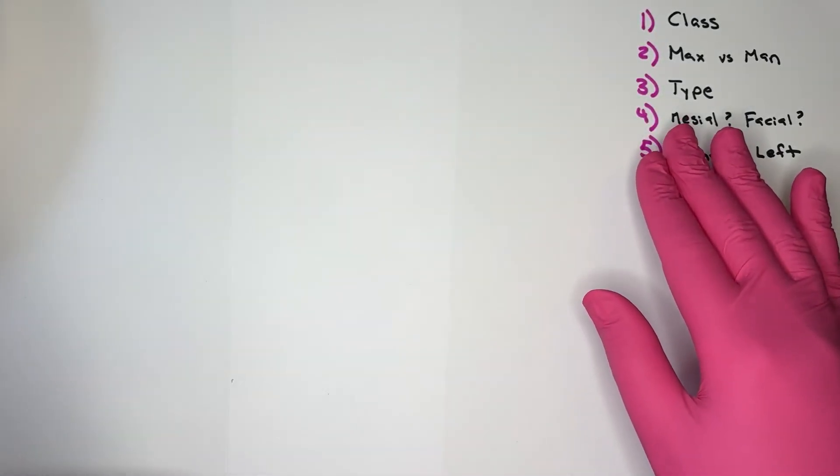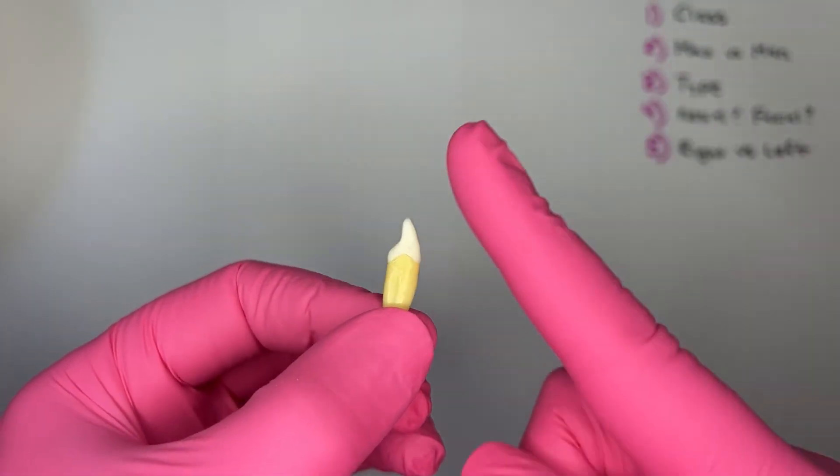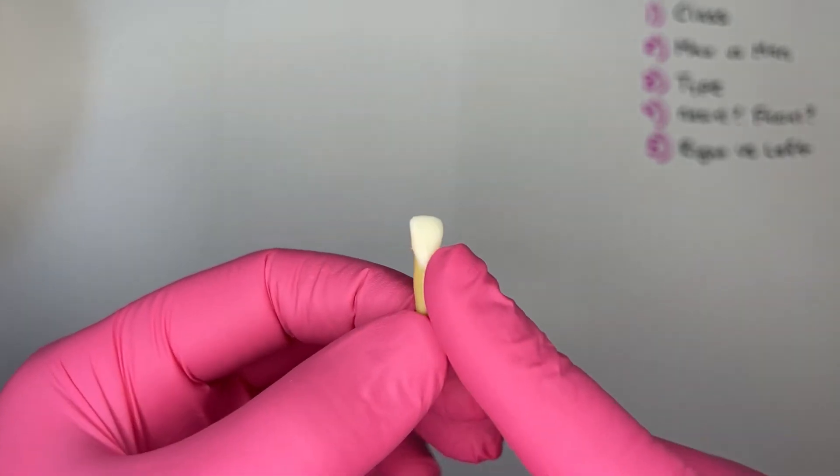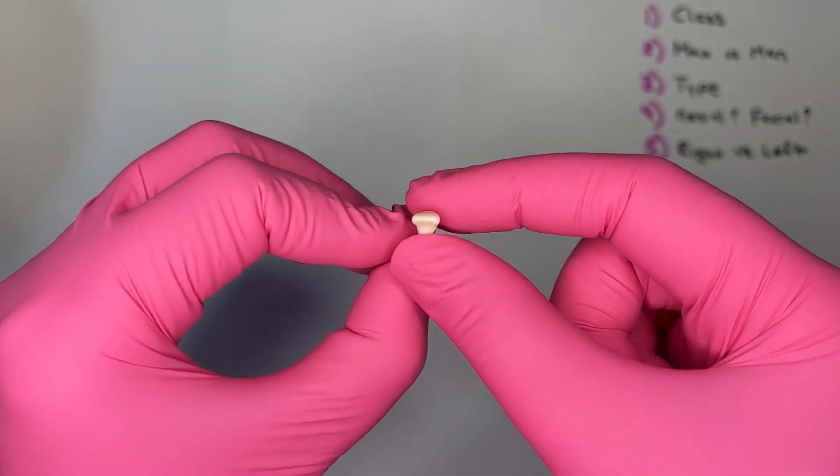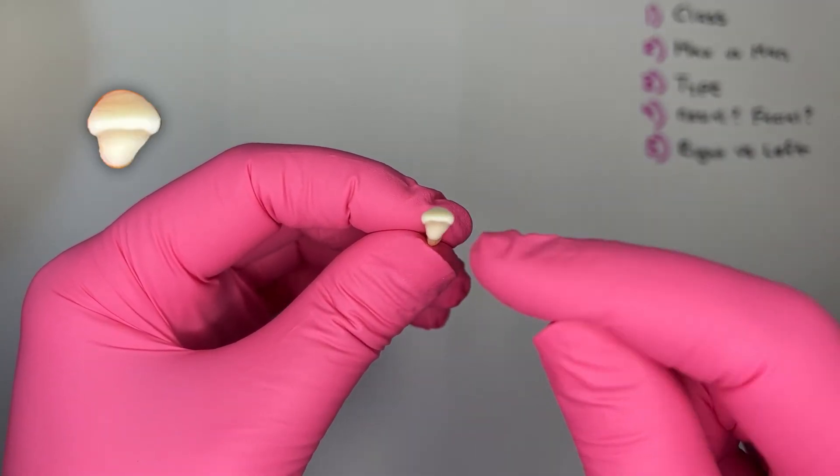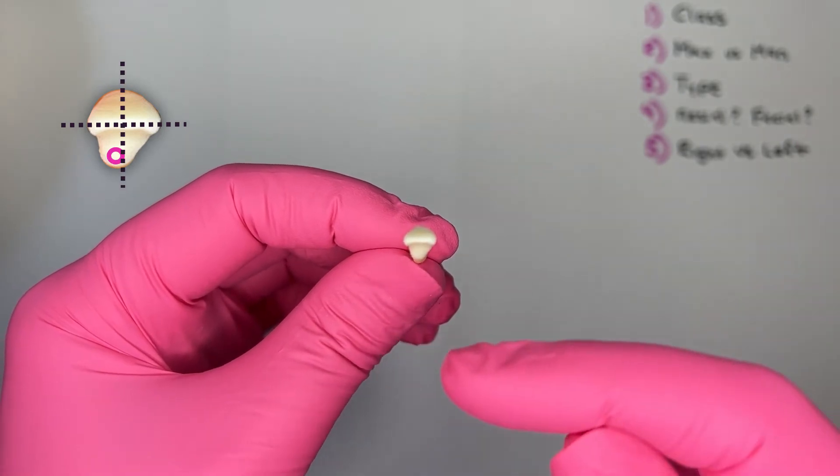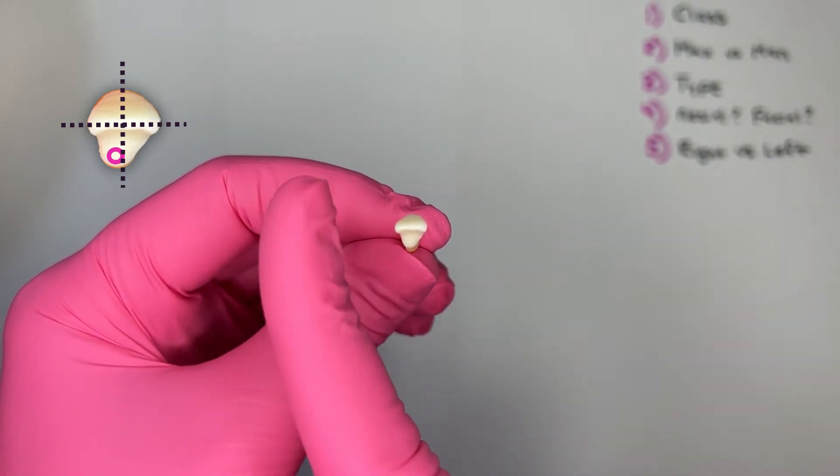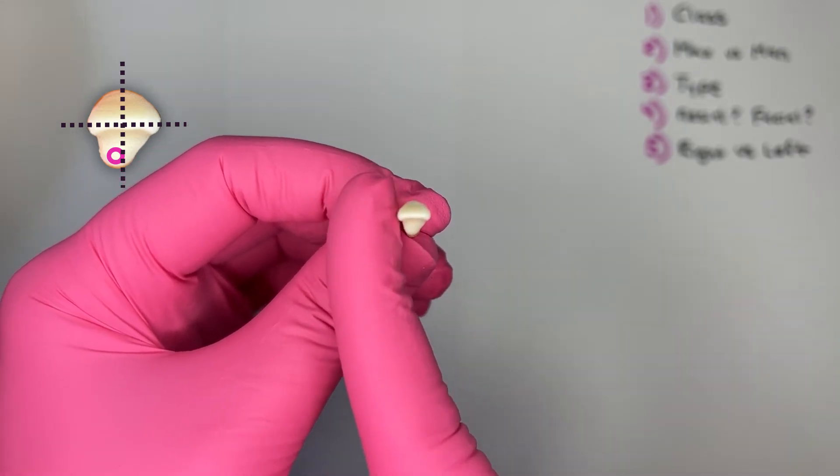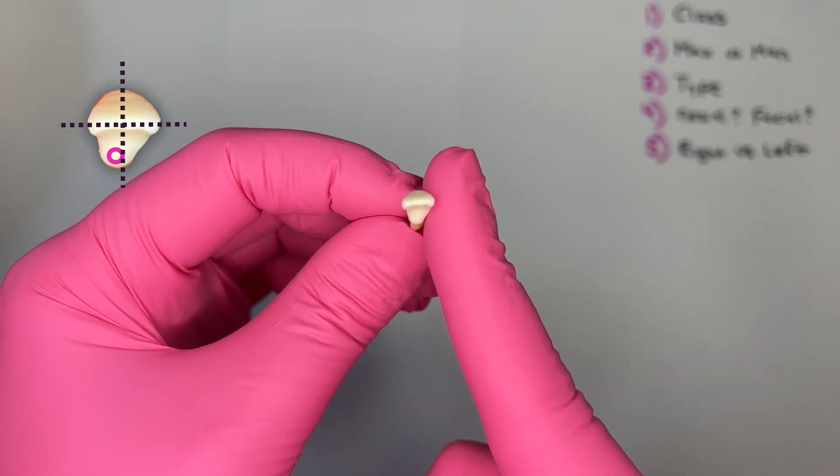Step four, figure out mesial versus distal, facial versus lingual. For incisors, facial is going to be that convex side and I'll figure out mesial versus distal by once again looking from the incisal, holding that incisal ridge horizontal to my eye line. And the cingulum is displaced to one side, specifically this side. Mandibular lateral incisors cingulums are displaced to the distal. So this side is the mesial.